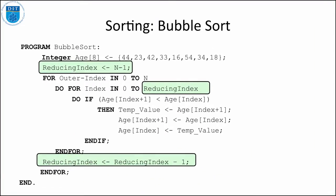We add in a new variable called reducing index, and reducing index starts at n-1. And the inner loop now doesn't go from 0 to n-1, it goes from 0 to reducing index, which is n-1 in the first instance. Then when it's finished the inner for loop, we take one away from reducing index and now it's n-2.